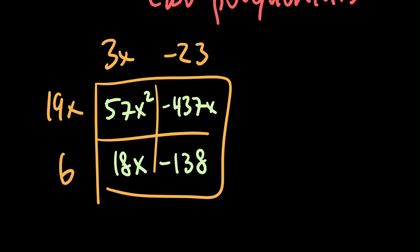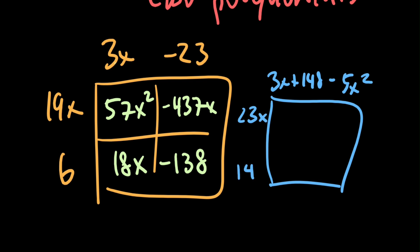And you could do this for any sort of polynomial. Let's say we had some sort of box here, and our first factor was 3x + 148 - 5x², and then 23x and 14 down here. We just draw three lines here, and then simply multiply and get our answer that way.